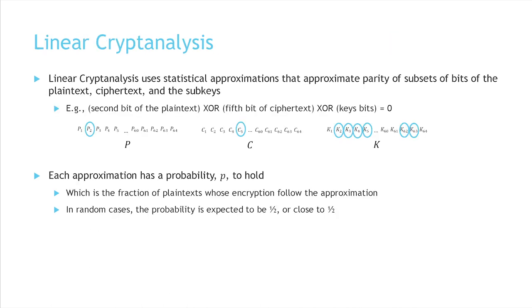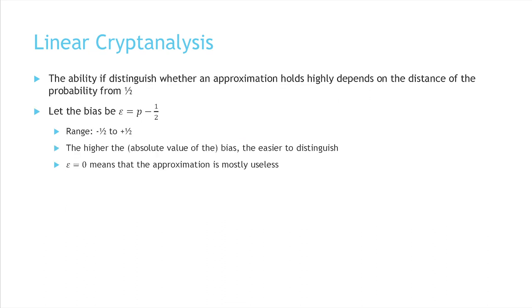Linear cryptanalysis uses statistical approximations that approximate the parity of subsets of bits of the plaintext, ciphertext, and the subkey. In an ideal cipher, any linear equation involving plaintext bits, ciphertext bits, and key bits would hold with probability close to half. Linear cryptanalysis takes advantage of the fact that some linear approximations have probabilities different from half. We call the distance of the probability from half the bias of the approximation.